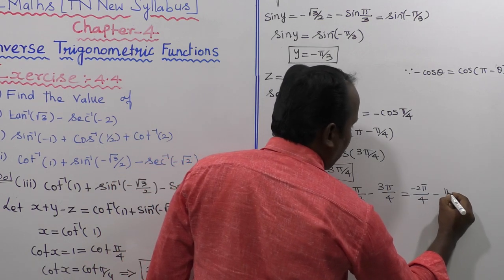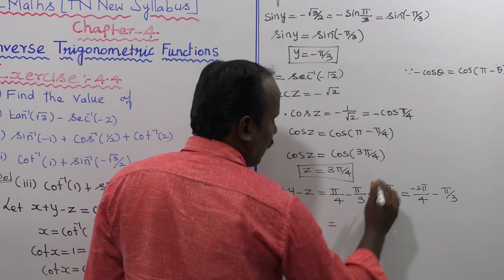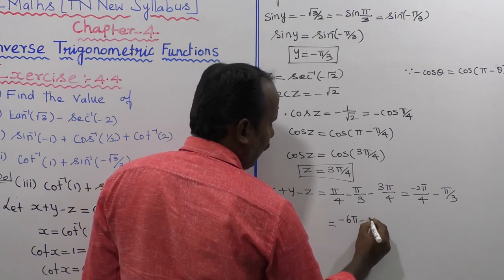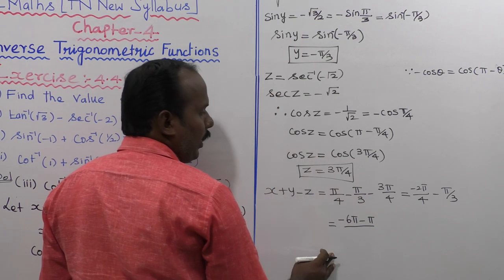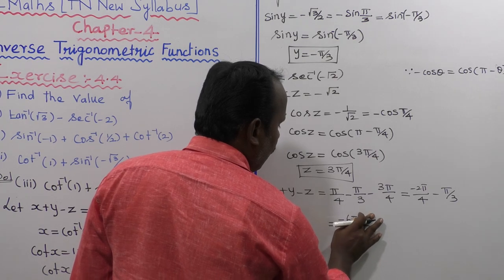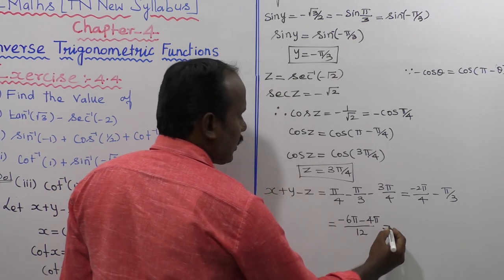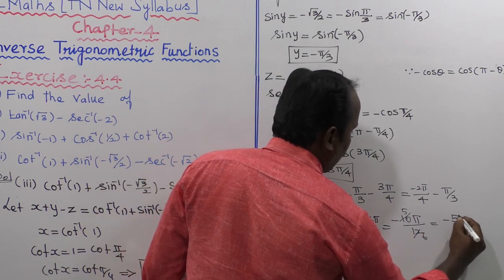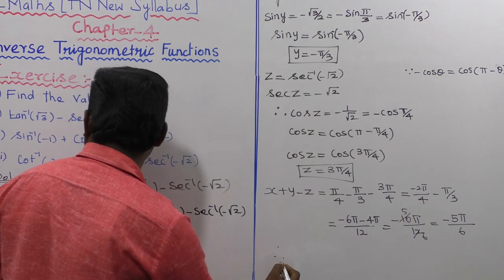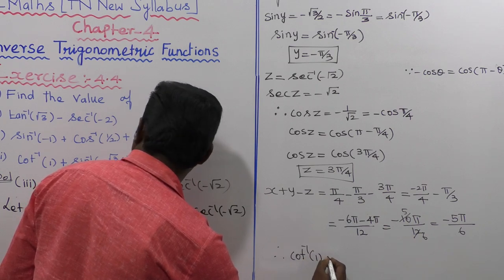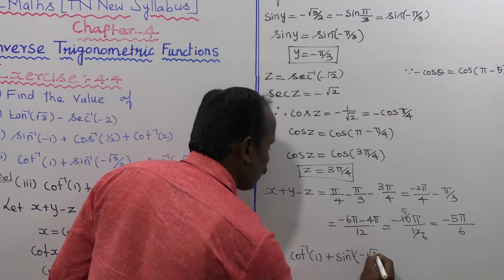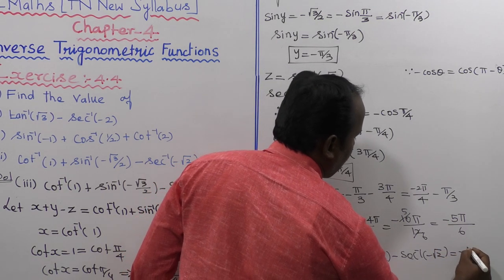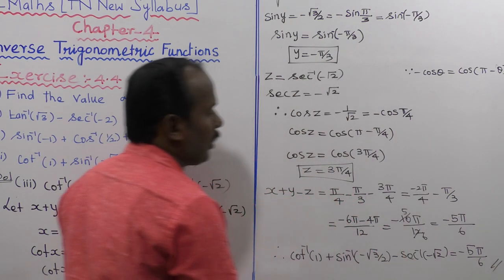Combining with a common denominator of 12: minus 6 pi over 12 minus pi by 3 becomes minus 6 pi over 12 minus 4 pi over 12, giving minus 10 pi divided by 12. Simplifying by cancelling 2, we get minus 5 pi divided by 6. Therefore, cot inverse of 1 plus sine inverse of minus root 3 over 2 minus secant inverse of minus root 2 is equal to minus 5 pi by 6.